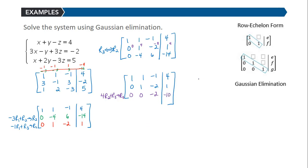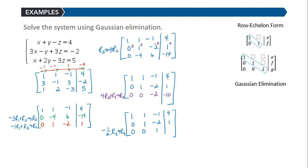We're almost there. I need a 1 in the third row, third column. To do that, I'm going to multiply the third row by negative one-half. Negative one-half times 0 is 0, negative one-half times 0 is 0, negative one-half times negative 2 is 1, and negative one-half times negative 10 is 5.